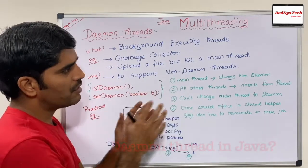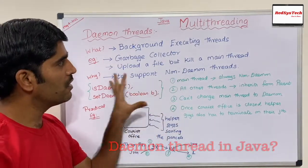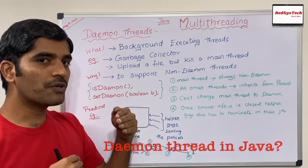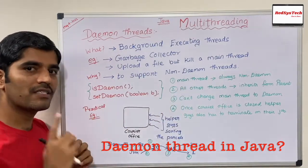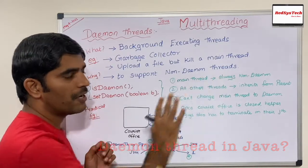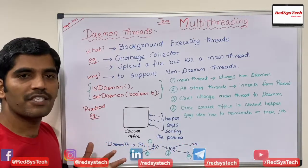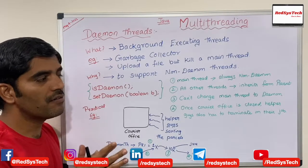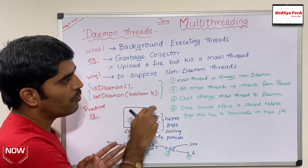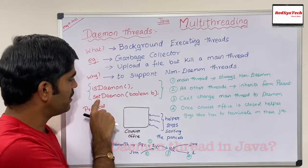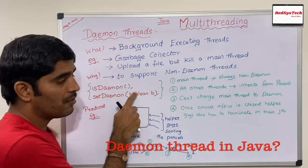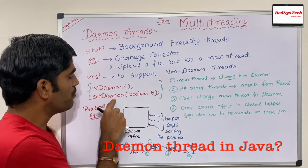Now I'm going to cover some important concepts about daemon threads. Whenever we write a Java program, the main class is executed by the main thread, so every Java program has at least one thread: the main thread. The main thread is always non-daemon. This means you cannot make the main thread a daemon, because the main thread cannot run in the background — it always executes at the real-time program level. If you check `isDaemon()` on the main thread, it returns false.